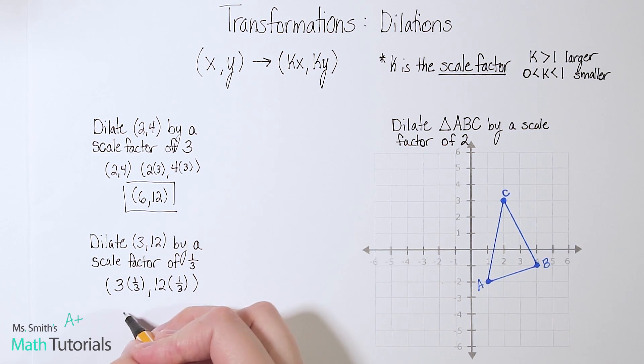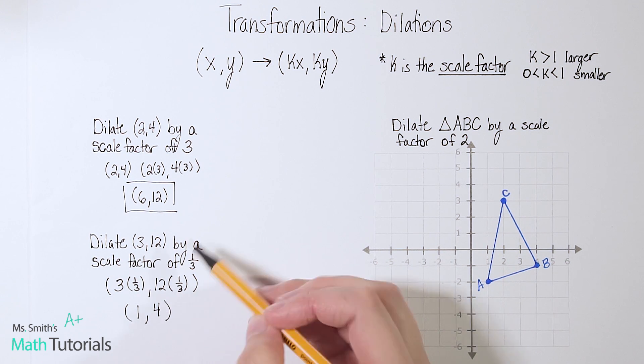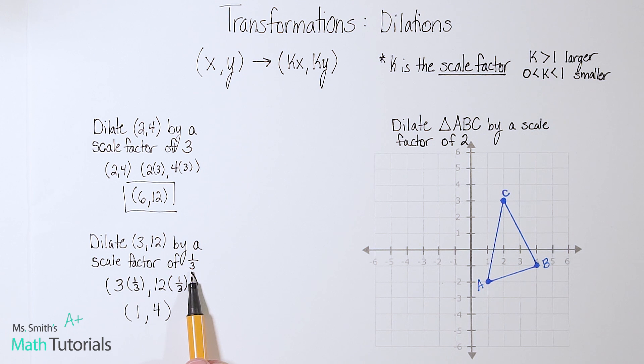Now 3 times one third is just 1. 12 times one third is going to give us 4. So notice how our point became smaller because our scale factor was between 0 and 1. It was one third.